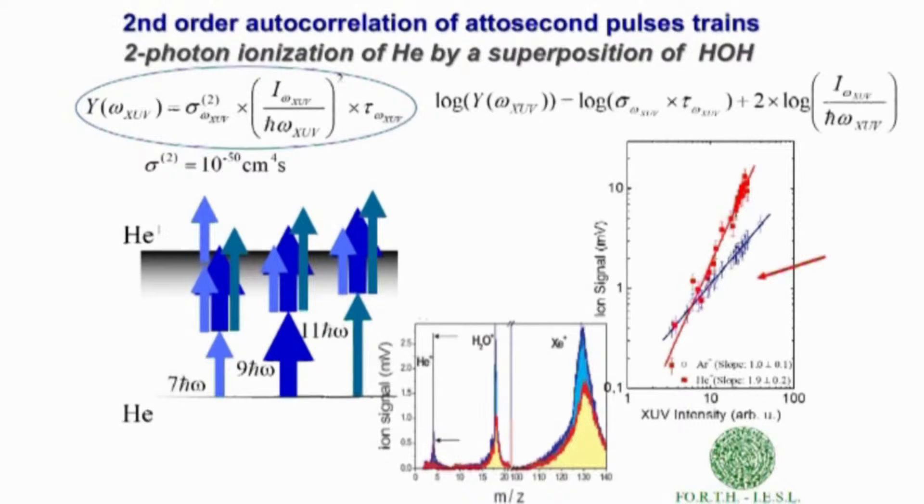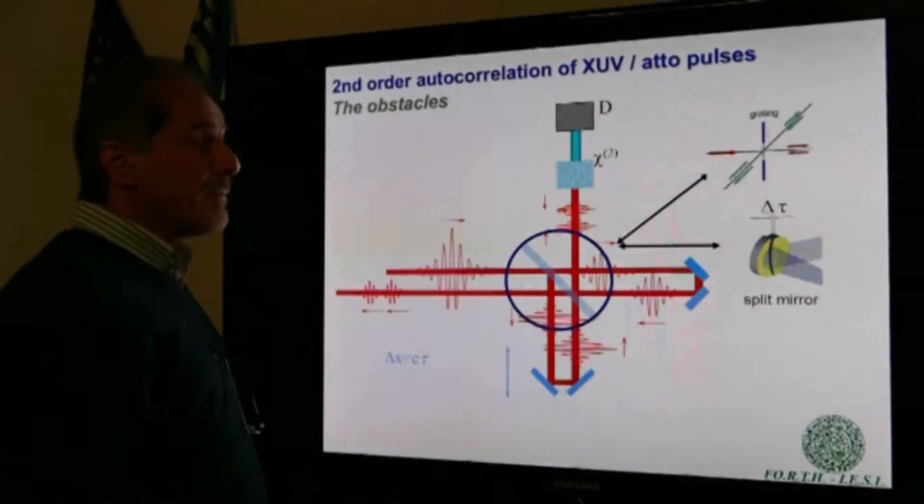In this viewgraph, what is shown is the ion signal as a function of the XUV intensity for argon and helium. Argon is single-photon ionizing, thus the blue curve has a slope of one, indicative for a single-photon ionization process. The red line is the ionization of helium and has a slope of two, indicative for a two-photon ionization process.